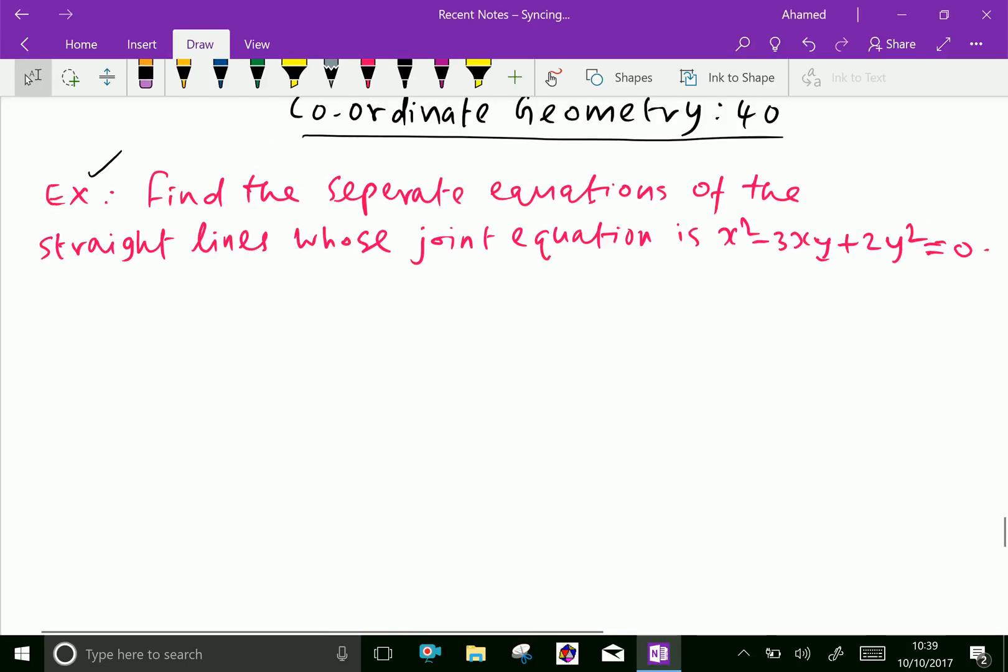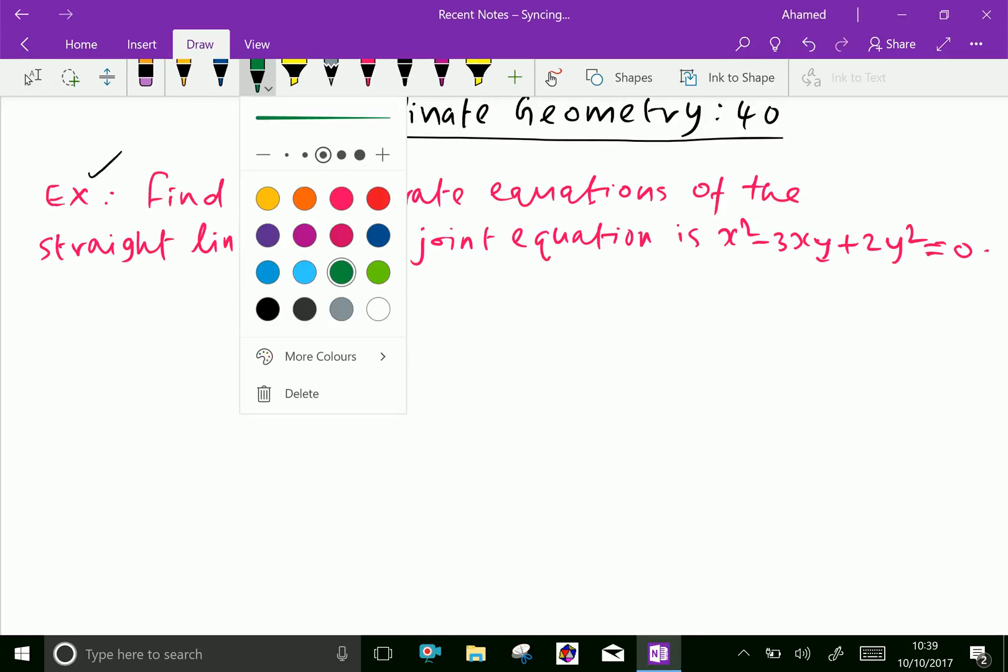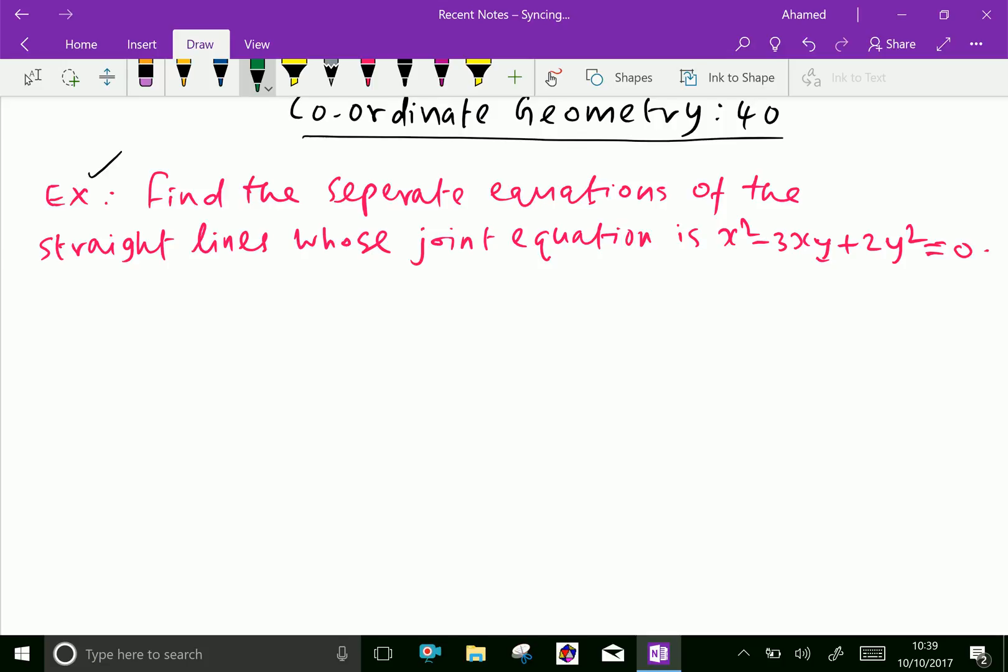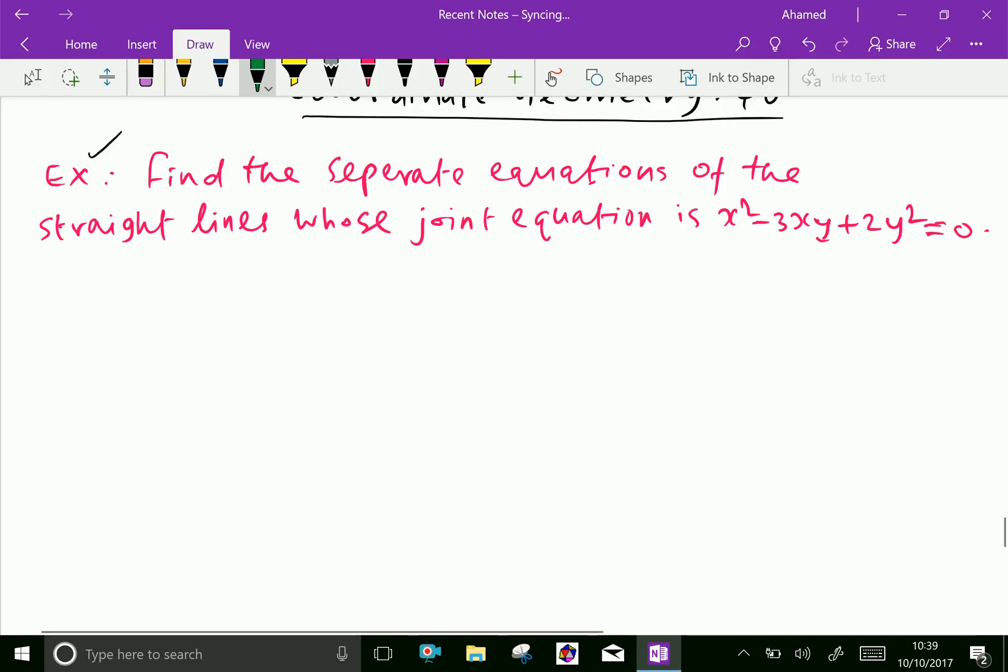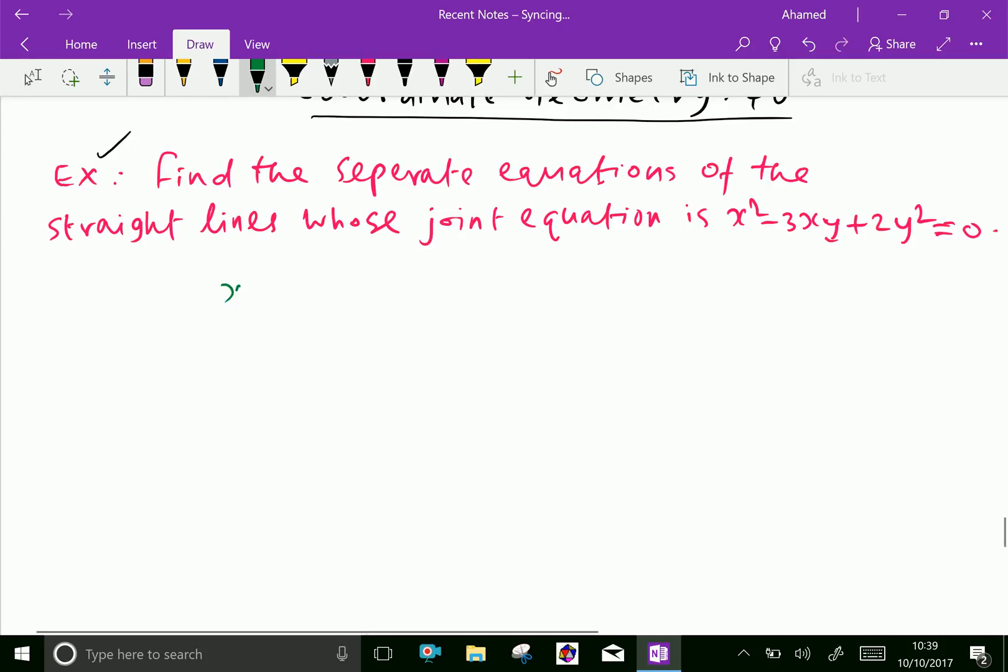Here, find the separate equation of the straight lines whose joint equation is x squared minus 3xy plus 2y squared equal to 0. Let us write the equation first. x squared minus 3xy plus 2y squared equal to 0.